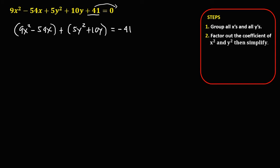Next, factor out the coefficient of x squared and y squared, then simplify. For x squared, put 9 outside: this becomes x squared minus 6x, since 54 divided by 9 is 6x. Then factor out 5 for y: this becomes y squared plus 2y, since 10 divided by 5 is 2.